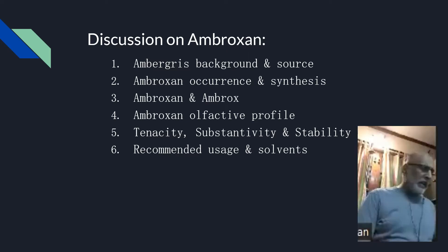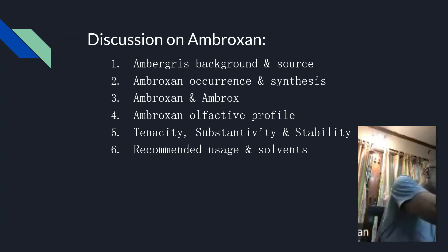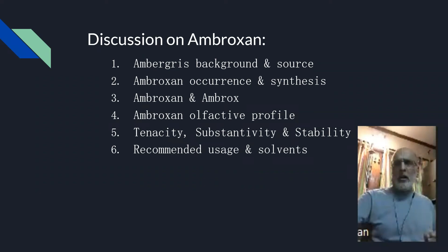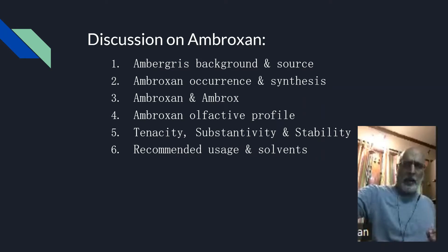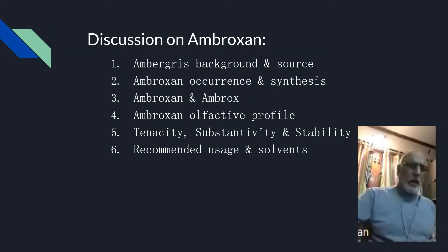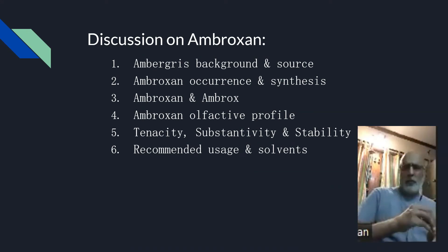As I shared with all of you in the first session, there are 350 to 400 natural fixatives. Out of this 400, only four are products of animal origin. The first is musk, the second one is ambergris, the third is civet, and the fourth is castoreum. Musk comes from the male musk deer, and ambergris comes from the vomit of the sperm whale.